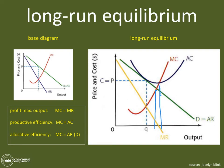Allocative efficiency is always where MC equals AR — at a quantity level right there. So in the long run, even when firms are making normal profits, allocative efficiency and productive efficiency are still always where MC equals AC and MC equals AR respectively. Productive efficiency is at Q2 where MC equals AC, and allocative efficiency is at Q3 where MC equals AR. That is a clean and crisp way of showing allocative and productive efficiency for firms in monopolistic competition — short run with abnormal profits, short run with a loss, and long run with normal profits.